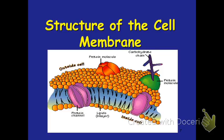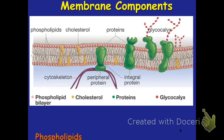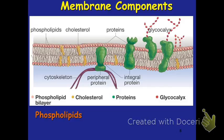Now let's get into the structure of the cell membrane. We're going to talk about several important components and their roles. Phospholipids are our first and foremost component — they provide most of the structure of our membrane. If you look at this picture, the molecules with the red heads and white tails are the phospholipids. You can see that the red heads are facing out and the tails are facing in, and we'll talk about the reason for that.